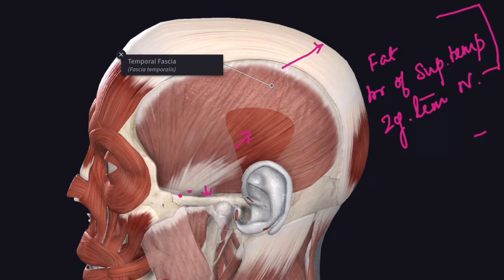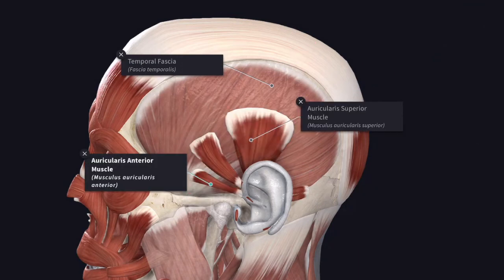The deep surface of the temporal fascia gives origin to the temporalis muscle. The superficial surface is covered by the downward extension of the galea aponeurotica and provides origin to the auricularis anterior and the auricularis superior muscles.